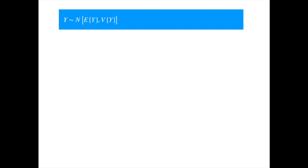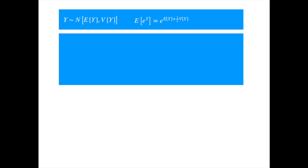But how does one get the moment-generating function? We know the Brownian motion is normally distributed, so we can just use the moment-generating function of the normal distribution. If y is normally distributed with some given mean and variance, then its moment-generating function is the exponential of its mean plus half of the variance. We have derived this formula in the arithmetic Brownian motion video. Now, our Brownian motion is normally distributed with mean zero and variance t, so theta times Brownian is also normally distributed, but the variance gets multiplied by the square of theta. Hence, we can write the moment-generating function of our Brownian motion accordingly.